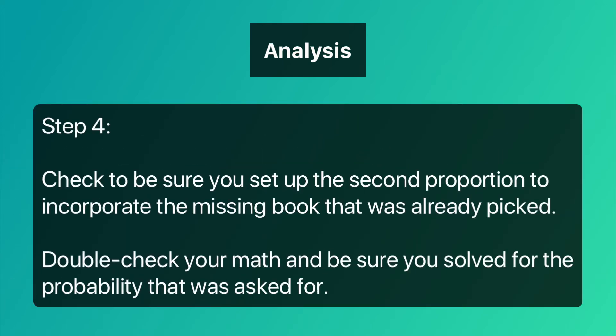Step four: check to be sure you set up the second proportion to incorporate the missing book that was already picked. Double-check your math and be sure you solved for the probability that was asked for.